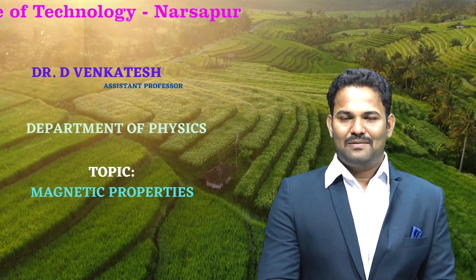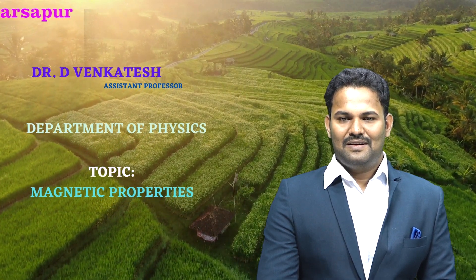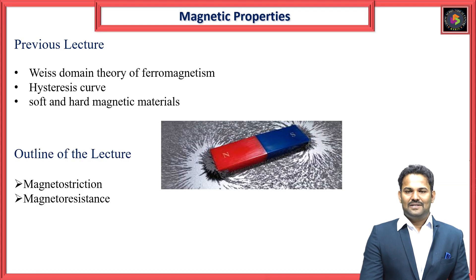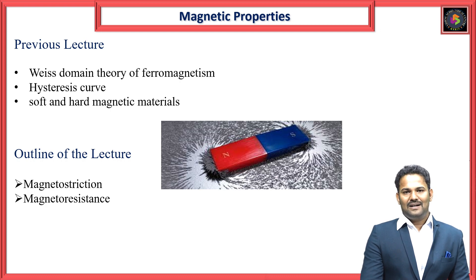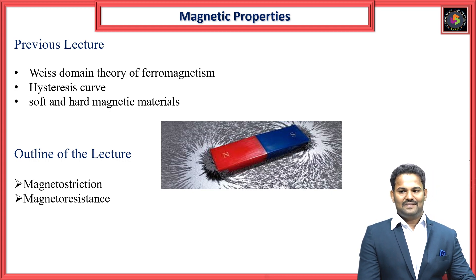Today we will discuss about magnetostriction as well as the magnetoresistance of magnetic materials. In the previous session, we completed the hysteresis loop of magnetic materials, domain theory of magnetic materials, ferromagnetism, as well as hard and soft magnetic materials and their differences.